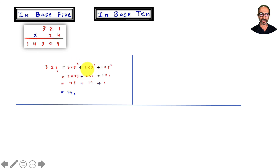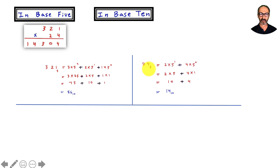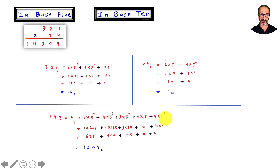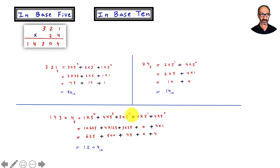3 times 5 squared plus 2 times 5 to the first plus 1 times 5 to the zero gives 86 in base 10. For 24 in base 5 that's 14 in base 10. Now comparing the result in base 10: if you multiply 86 by 14 you should get the base-10 equivalent of our base-5 answer — and that is true.